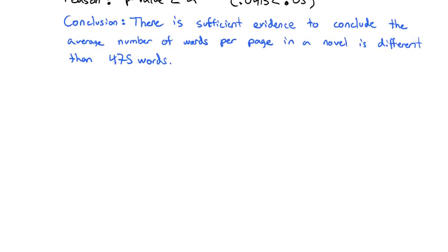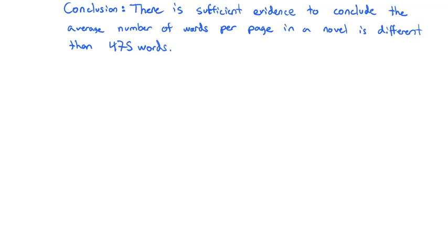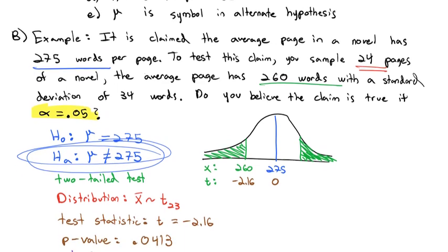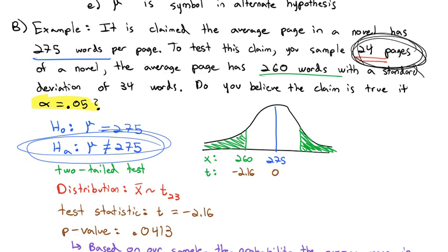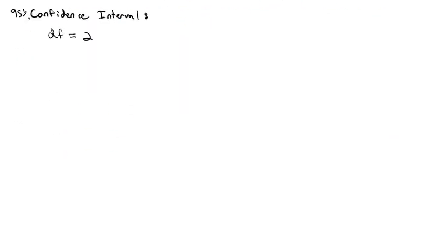Let's take this one step further and build a confidence interval for where we believe the actual mean number of words lies. Let's build a 95% confidence interval. We know the distribution we're dealing with, and the degrees of freedom is one less than the sample size — degrees of freedom is 23 because the sample size is 24 pages. Alpha is 0.05, so alpha over 2 is 0.025. We're looking for t sub 0.025 with 23 degrees of freedom.